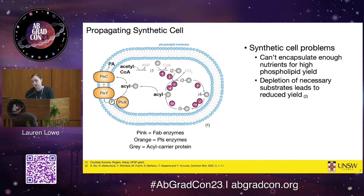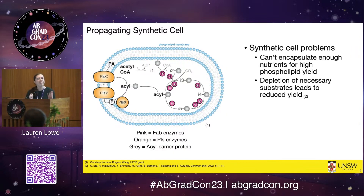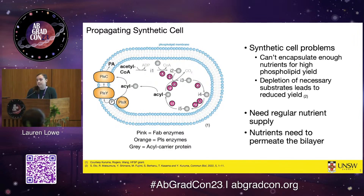One of the big problems with this system is that you can only encapsulate a small number of nutrients within the synthetic cell. There's only room for so many molecules, and if you encapsulate as many as you can, you only really get one to two percent membrane growth, which isn't really sustainable for a cell that we want to grow and divide. So what we really need is some sort of regular nutrient supply.